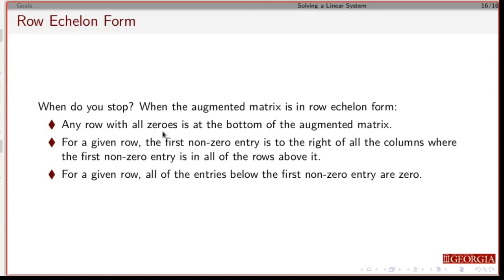If you pick any given row and you find the first column that has an entry that's not zero, then every number below that in that same column has to be zero.